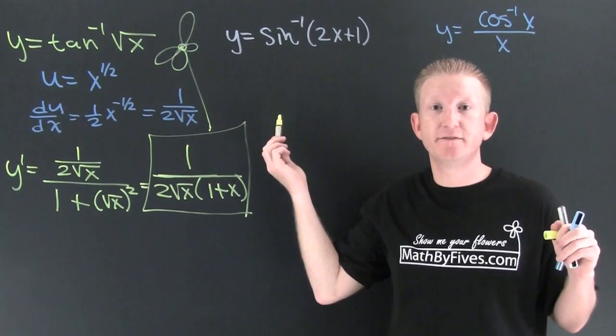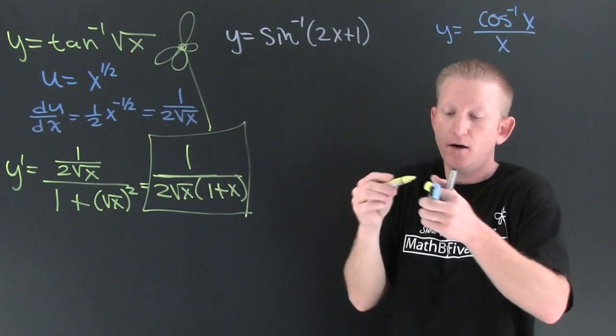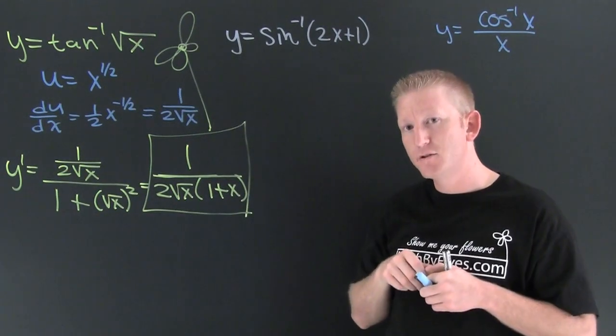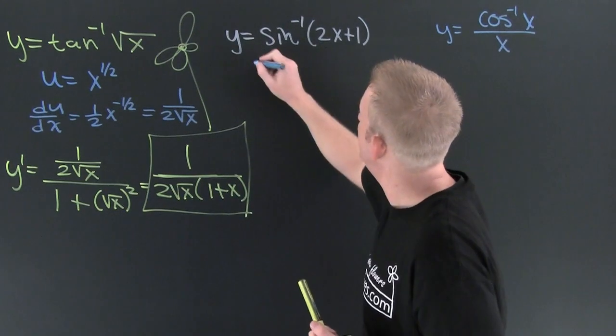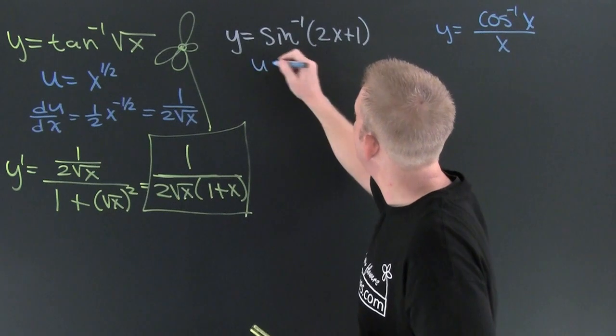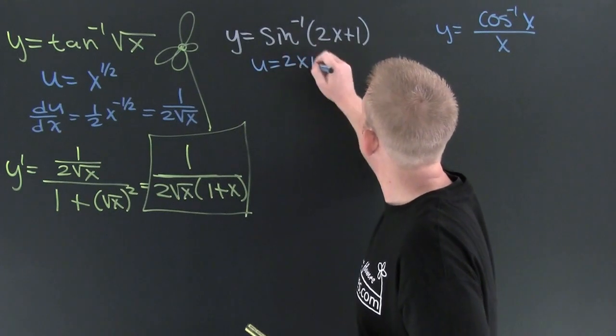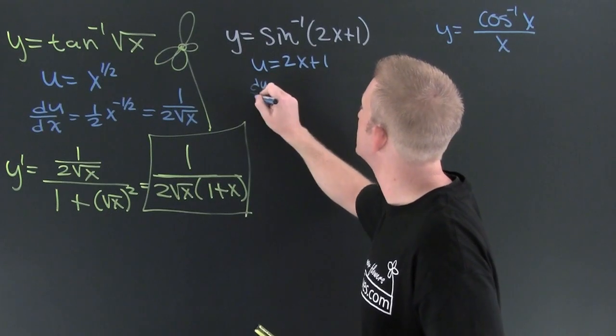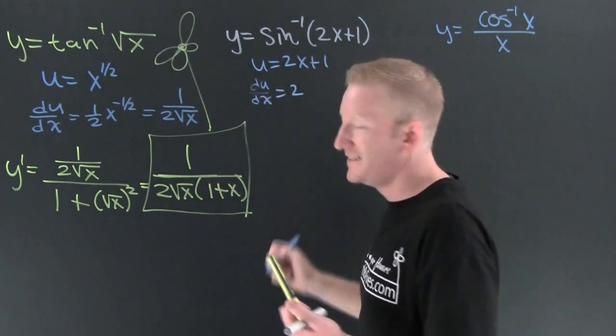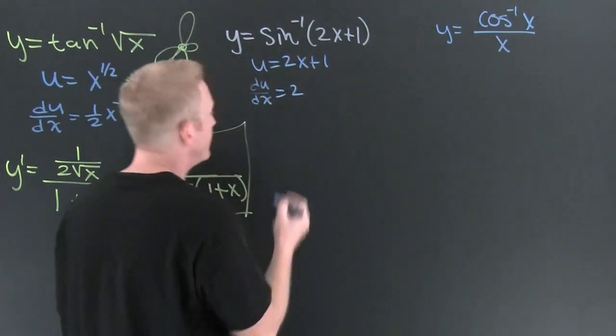Now I'm taking the derivative of this inverse sine. Oh boy, I'm gonna use those forms that I memorized. Yeah. So then, here u is gonna be, you're gonna be 2x plus 1. du/dx. It's gonna be 2? Uh-huh. Sure. Finish him.